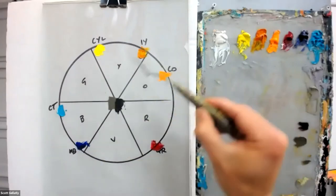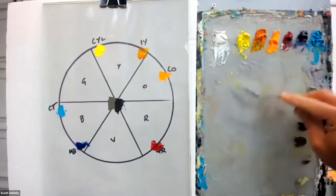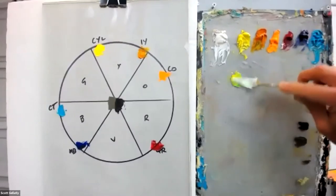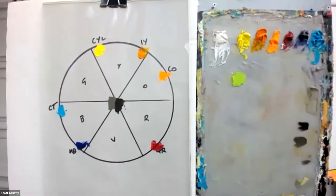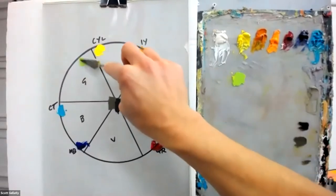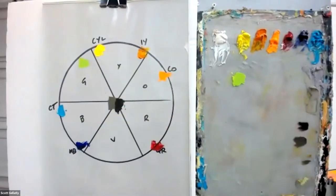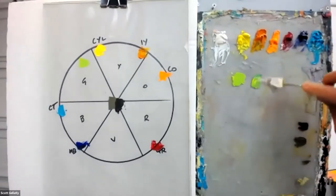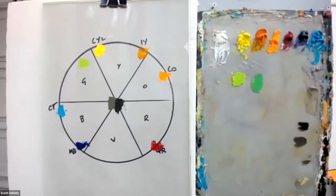So the same thing can be applied to mixing greens. And if I want the highest chroma greens, I'm going to start with the yellow and the blue that exist closest to each other. So the cad yellow light and the cobalt teal. And I can move within that line between them.